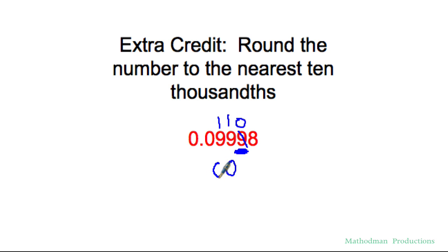1 plus 0 is a 1. 0.100 is the same thing as 0.1. Zeros don't change that value.